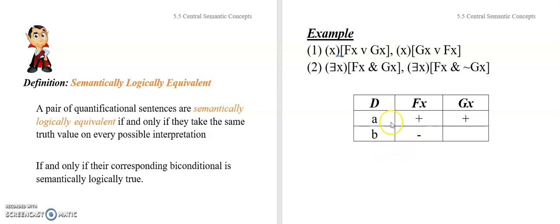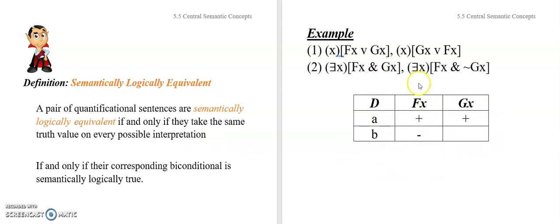Here's one single interpretation. On this interpretation, the first sentence is true — something in the domain satisfies the description of being both F and G, namely object A. But the second sentence — something in the domain is both F and not G — is going to be false. Nothing in the domain satisfies that description; A doesn't satisfy it, and B won't either. So here's one interpretation where the first sentence is true and the second sentence is false, meaning it is not the case that they take the same truth value on every possible interpretation.